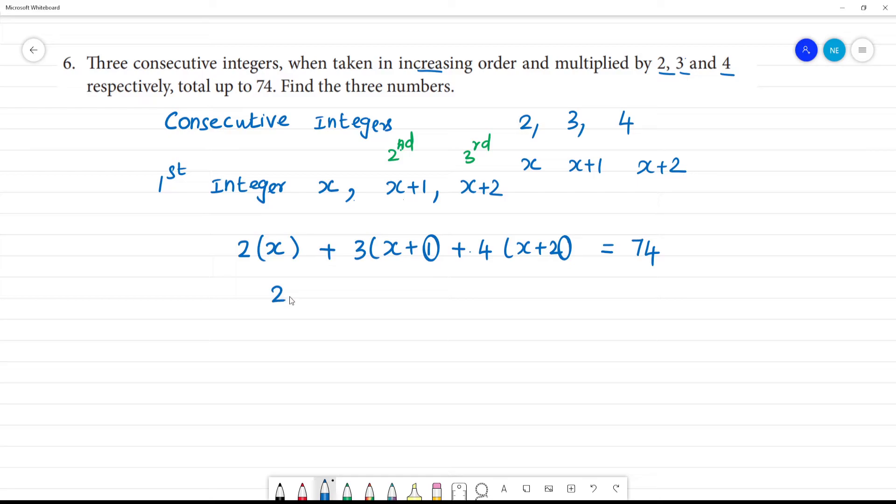So we write: 2x plus, this is 3 outside the bracket, in the x plus 1, we get 3x. Then 3 times 1 is 3, plus this multiplied by this and this multiplied by this, we get 4x plus 8 is equal to 74.